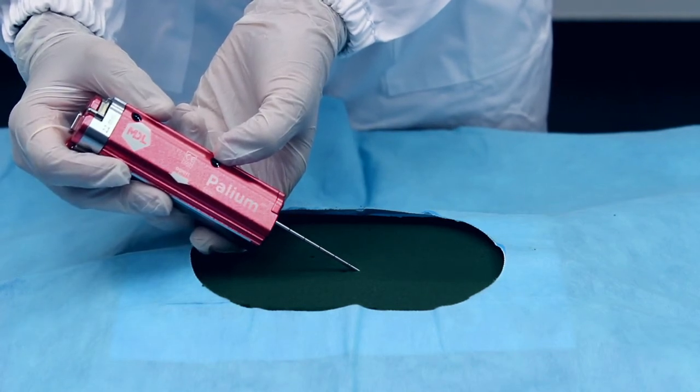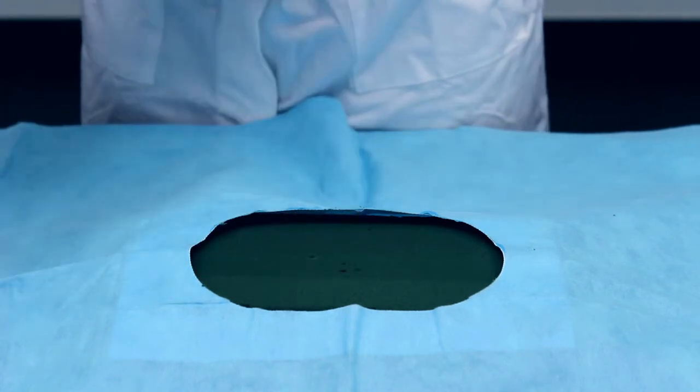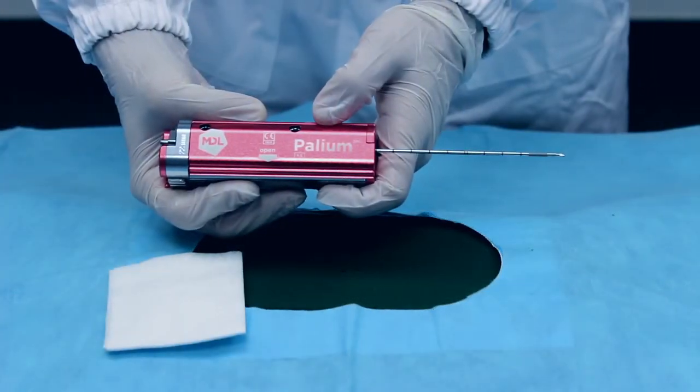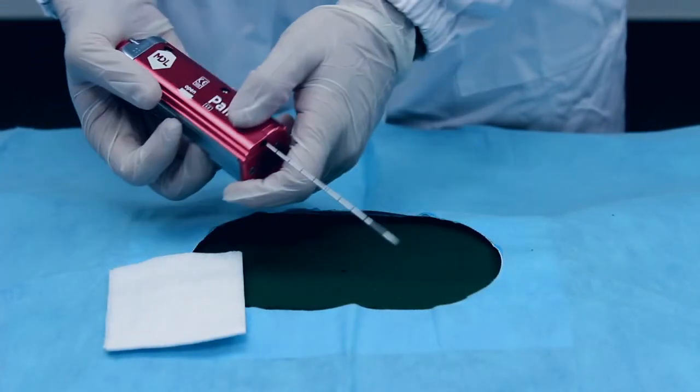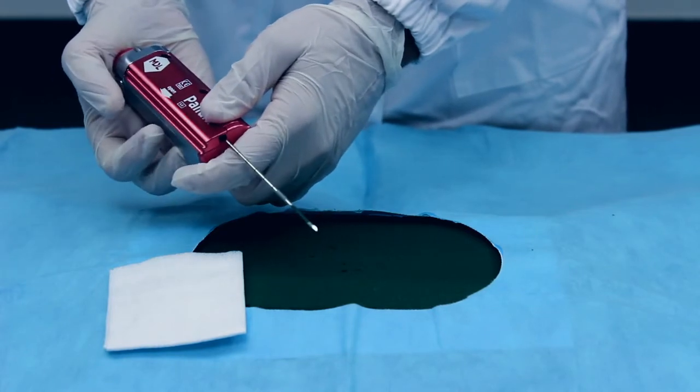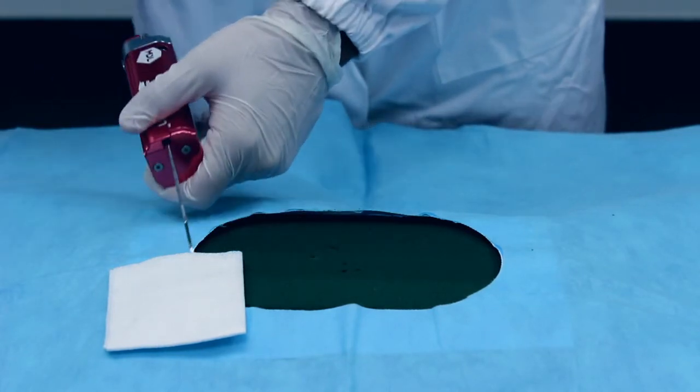Remove the device from the patient. To remove the sample from the Palium device, pull on the loading handle once in order to draw back the cannula and expose the sample.